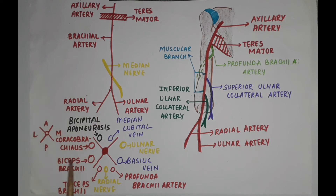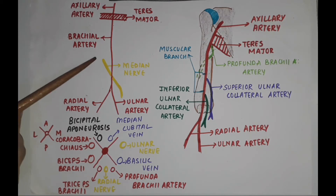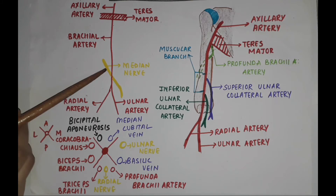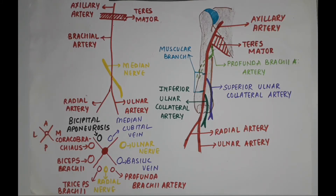Laterally, it is related to the coracobrachialis muscle and the biceps brachii muscle. In the upper part we have the median nerve on its lateral side, whereas in the lower part we have the tendon of the biceps brachii muscle.